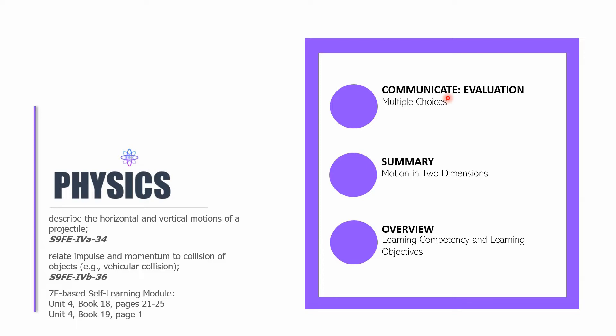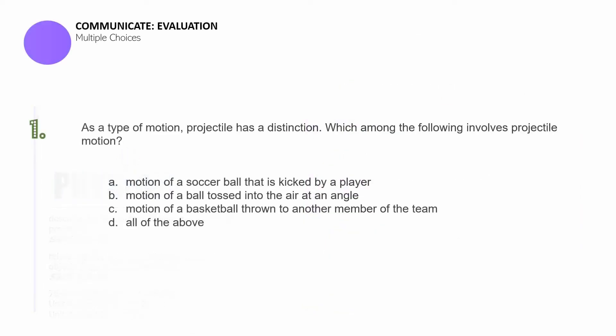And then for the last part of this session, we have an overview about the next book, which is book 19, learning competency and learning objectives, which we want to discuss. In the previous session, we ended up having the evaluation under the communicate section, where you did a concept map. But this time, we will be having an evaluation using multiple choice items.